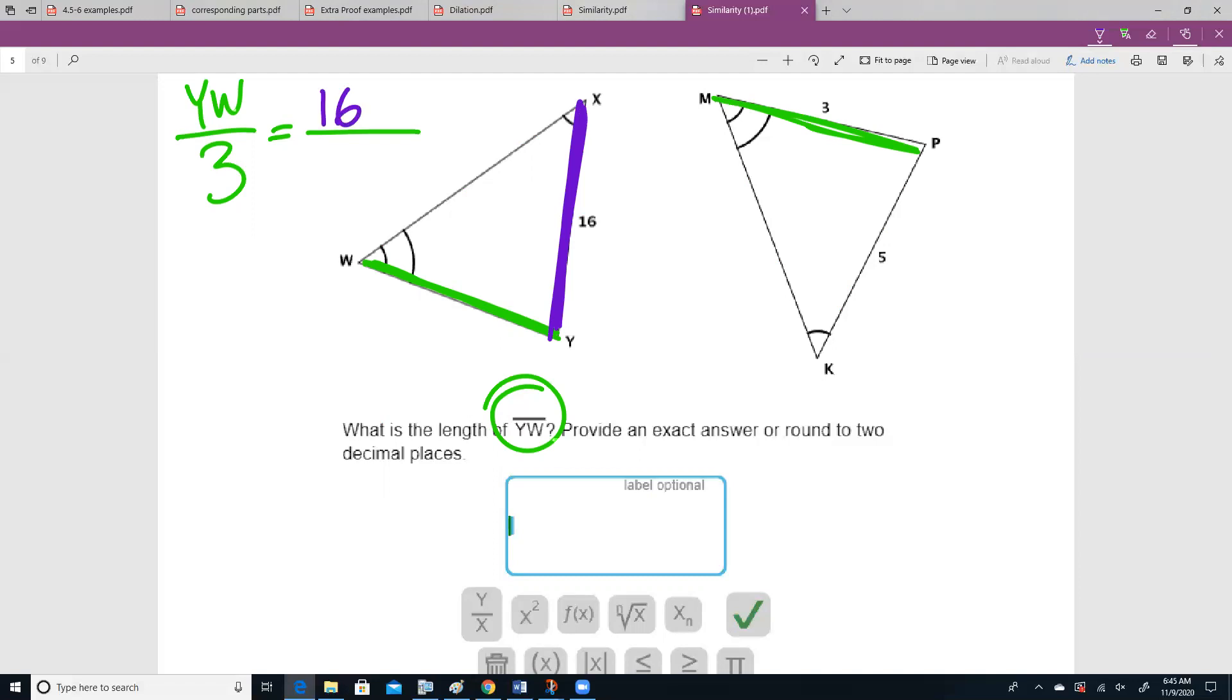16, we're going from one swoop to no swoops, one swoop to no swoops. Those guys correspond as well. And now I can cross multiply. But another thing I could do if I don't feel like cross multiplying is, right now, wy is just being divided by three. So I could just multiply each side by three. The threes over here would cancel, and wy would give me an answer.